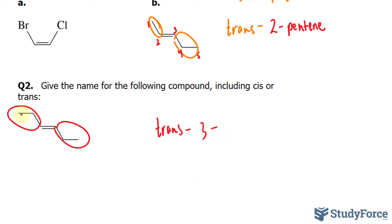The prefix for this 1, 2, 3, 4, 5, 6 carbon molecule is hexene. So the answer is trans-3-hexene.